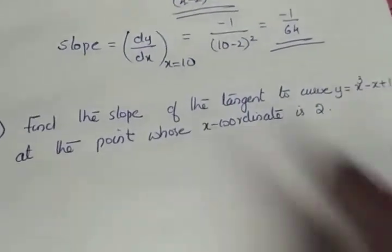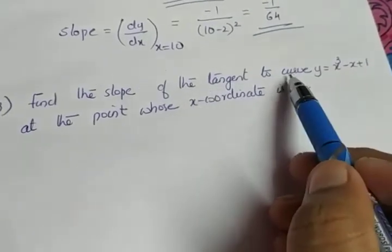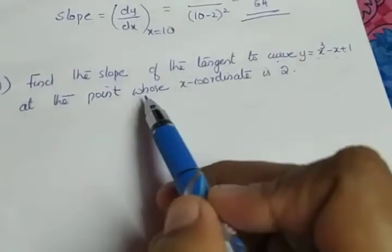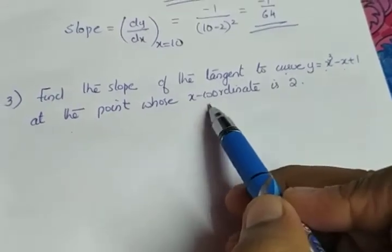Moving to the next question. Find the slope of the tangent to the curve y equals x³ minus x plus 1 at the point whose x coordinate is 2.